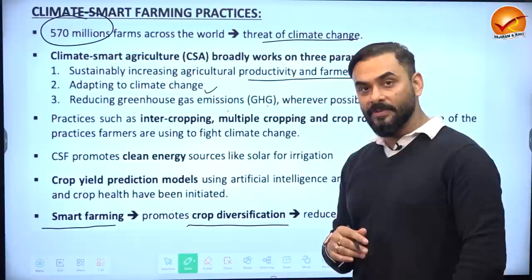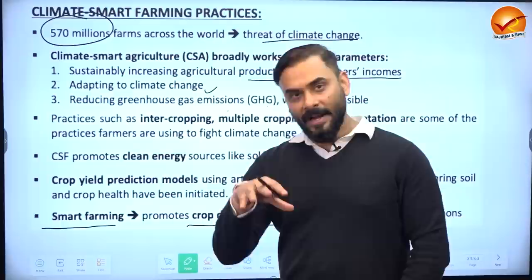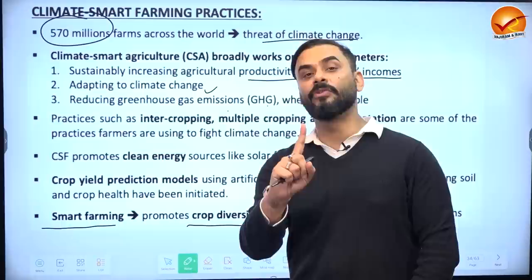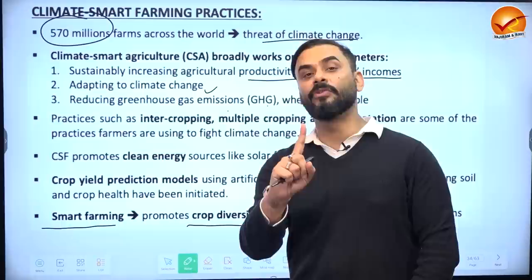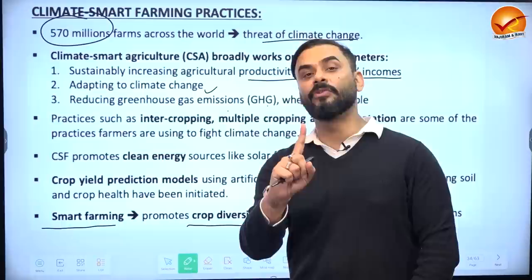Smart farming means promoting crop diversification rather than mono-cropping. Growing only one crop continuously exhausts specific soil nutrients. Diversification preserves soil health. We should also reduce dependence on monsoon. That is what is meant by smart farming in the context of climate smart agriculture.